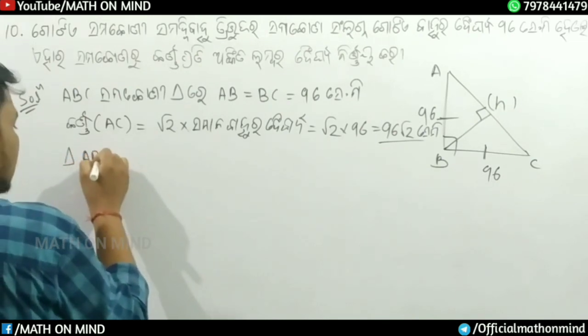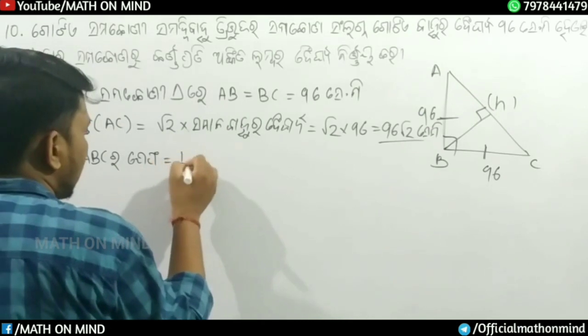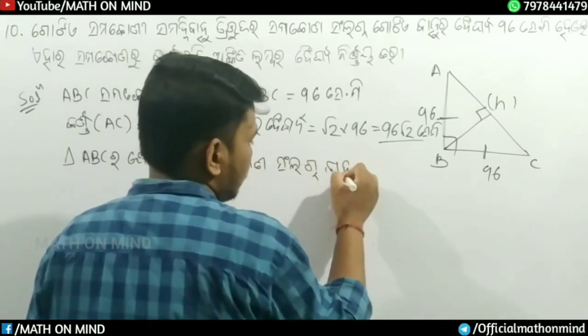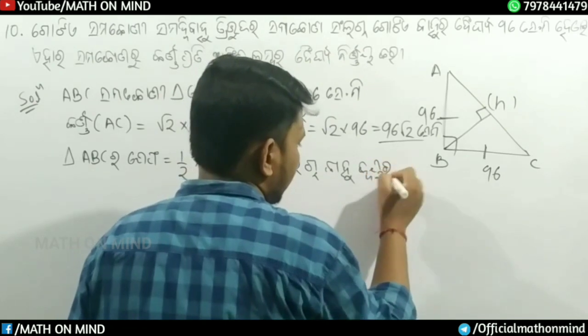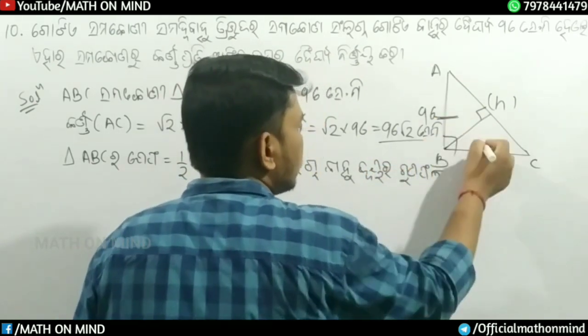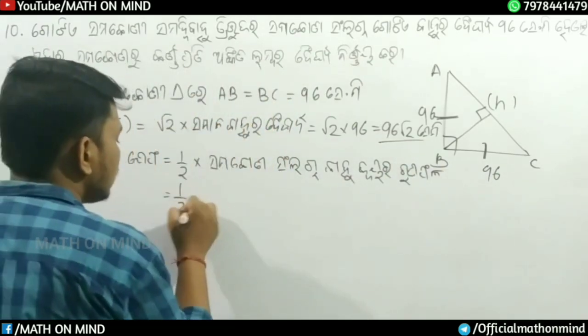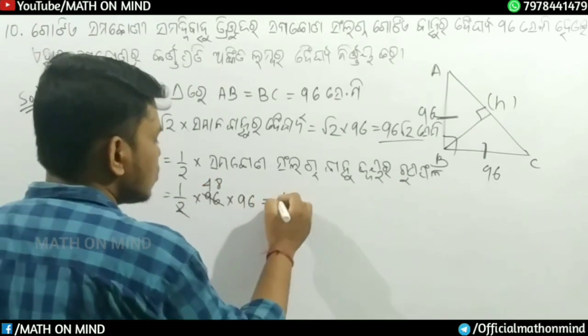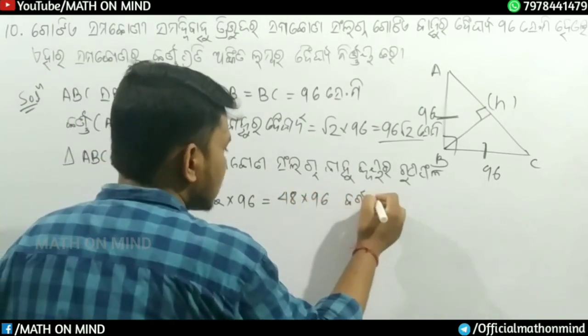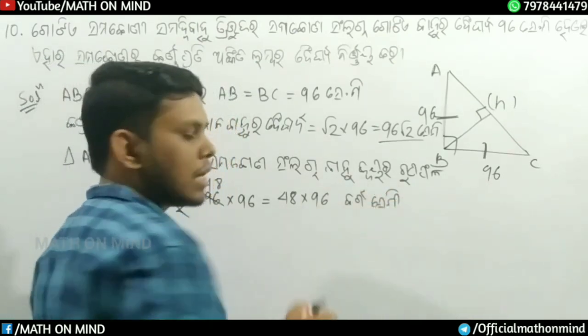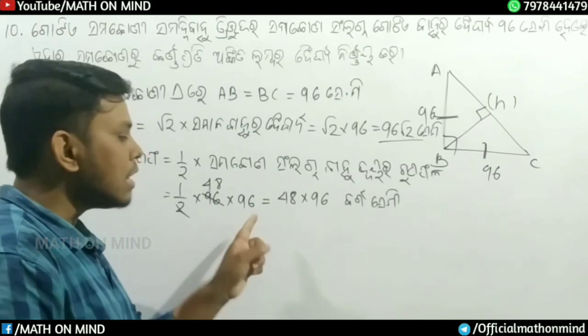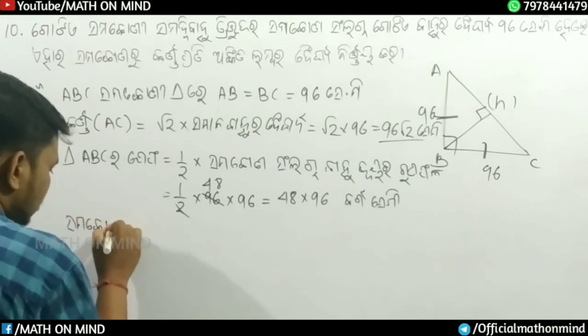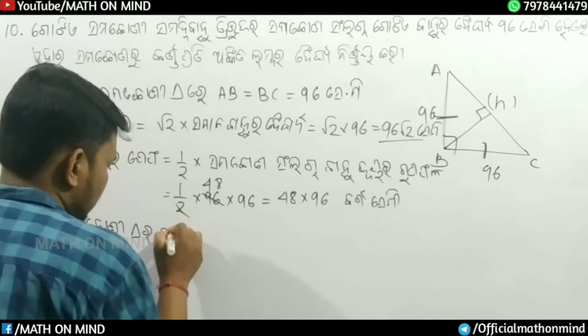For the area calculation, the formula gives us: one half times base times height. This equals 96 into 96, which is 48 times 96 square centimeters. Simplifying this, we can cancel terms and work through the calculation systematically.